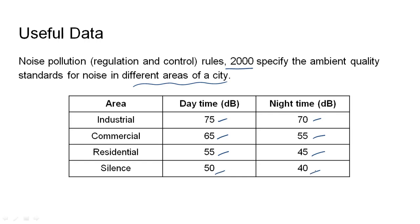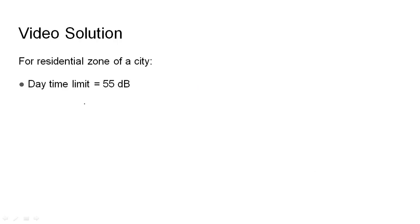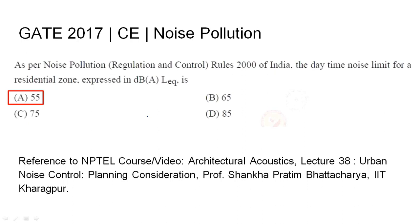Coming to the solution — for a residential zone, the daytime noise limit is 55 decibels and the nighttime limit is 45 decibels. Therefore, the answer to this question is 55 dB, which is option A. The relevant NPTEL reference has been cited.